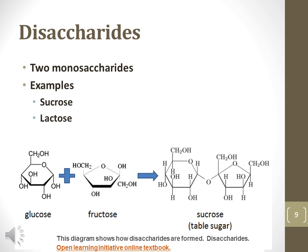Disaccharides are the combination of two monosaccharides that are covalently bonded together. The process of combining carbohydrates involves a type of reaction known as dehydration synthesis because a water molecule is lost by the reactants. As you can see from the example on the screen, glucose and fructose combine to make sucrose, or table sugar. Lactose, a dairy sugar, is another example of a disaccharide.